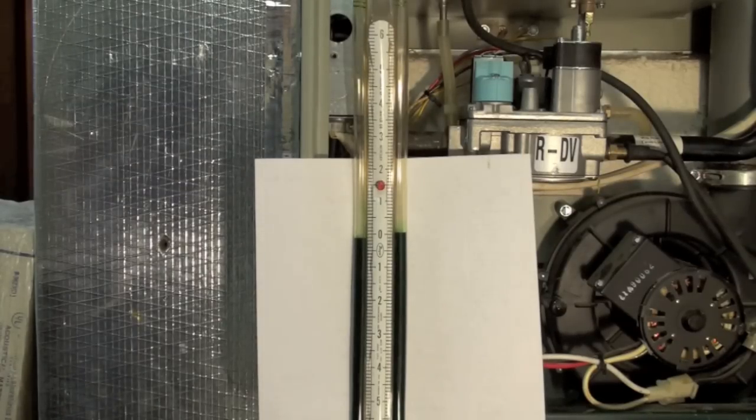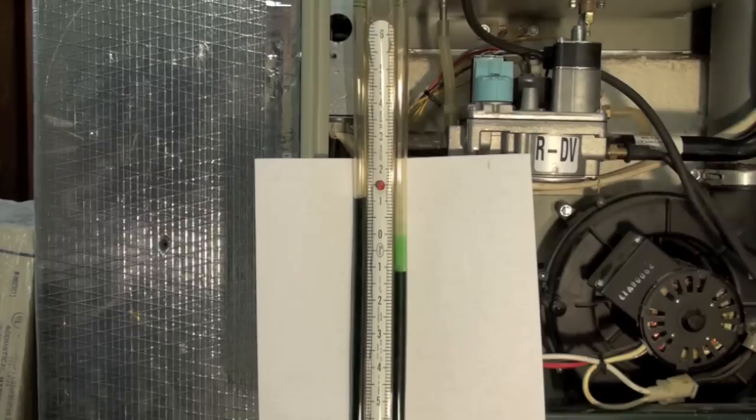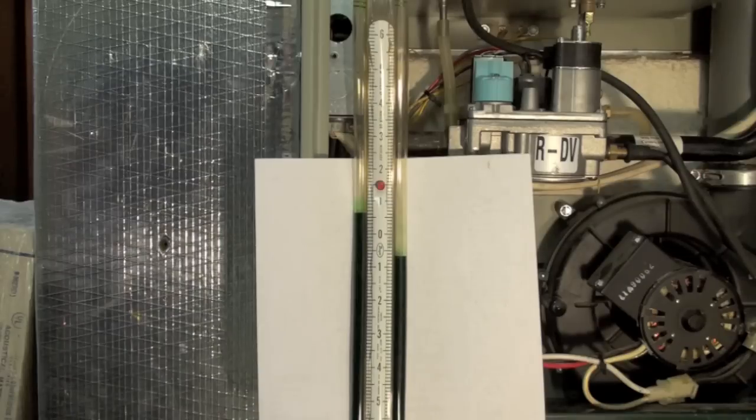We have started the inducer with the slack tube manometer. We're showing just a little bit of pressure difference when the inducer came on, hot surface igniter's on, burner should come on momentarily. It looks like I'm showing about six and a half tenths and that would be 1.3.